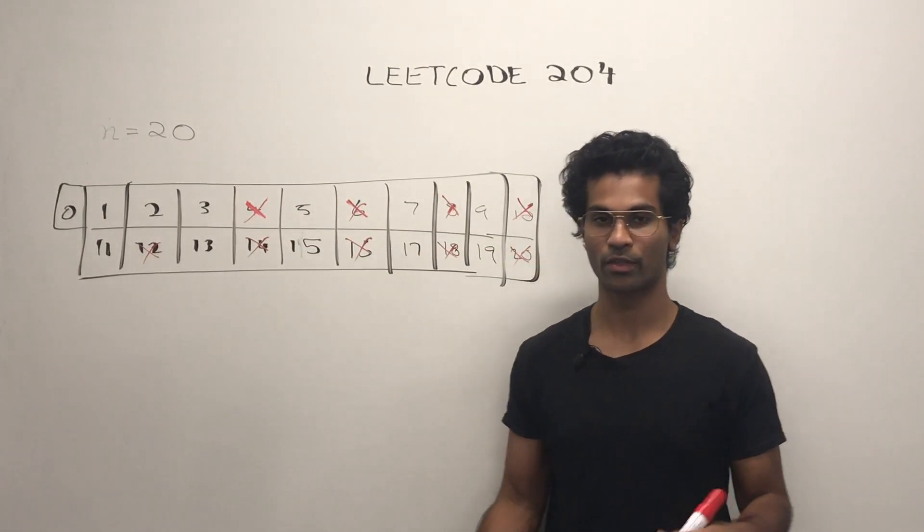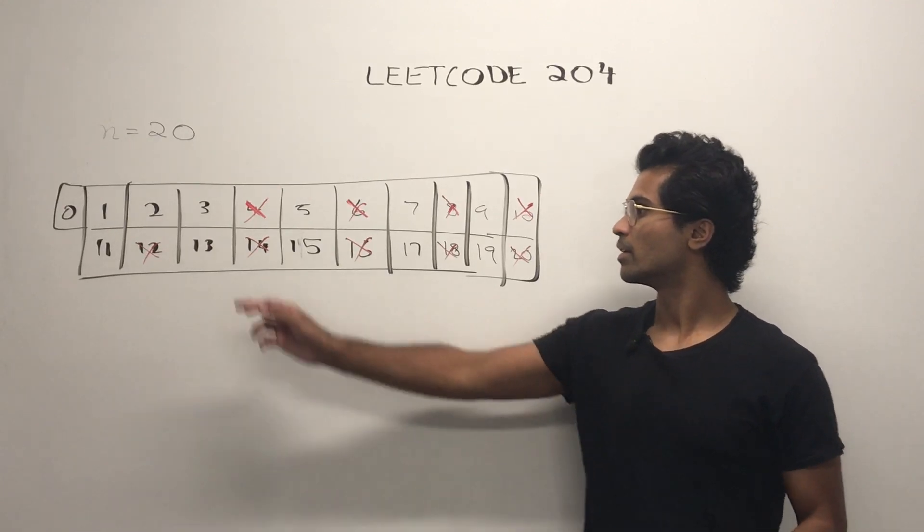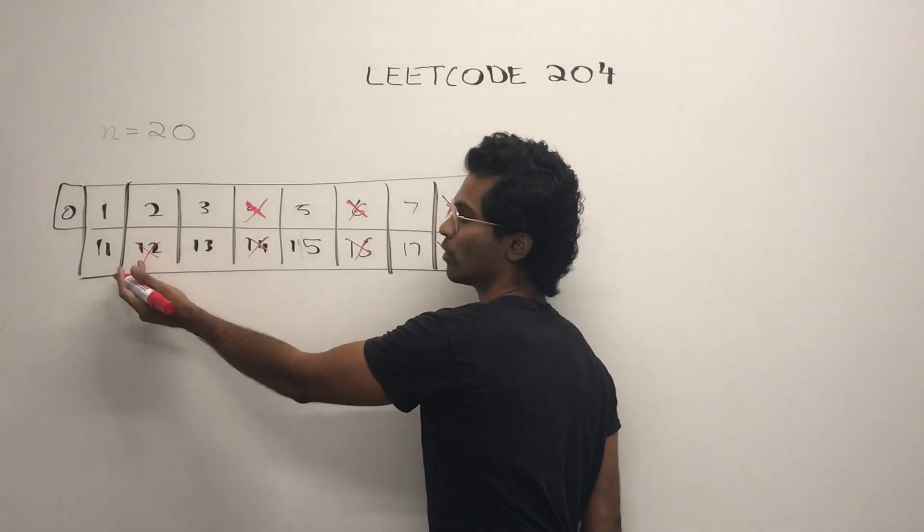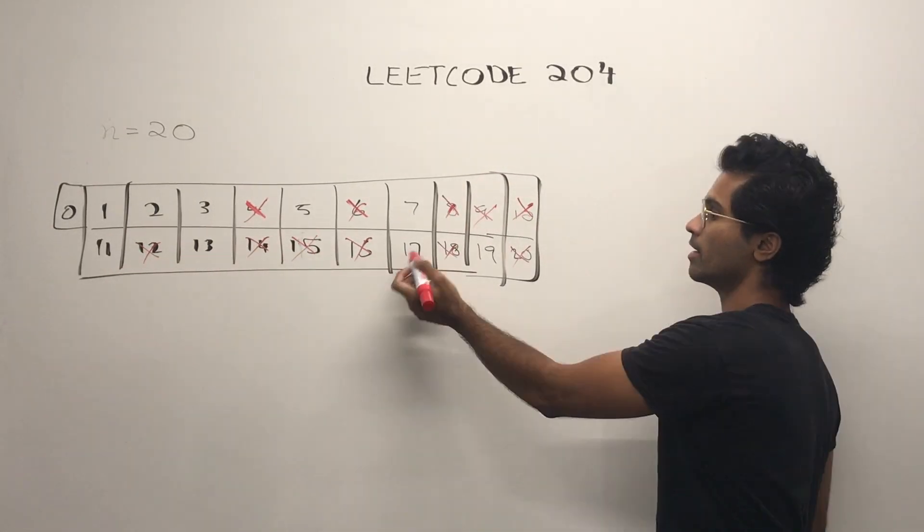Next, we look at 3. 3 squared is 9. This is already eliminated, 15 and 18.